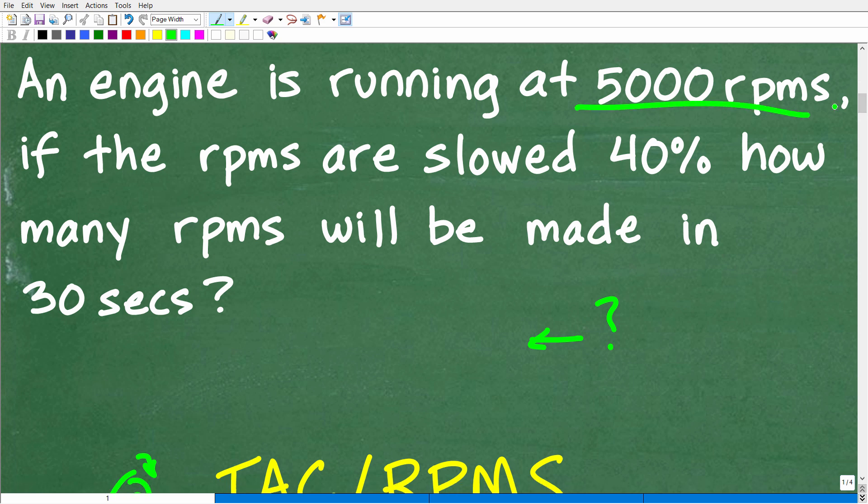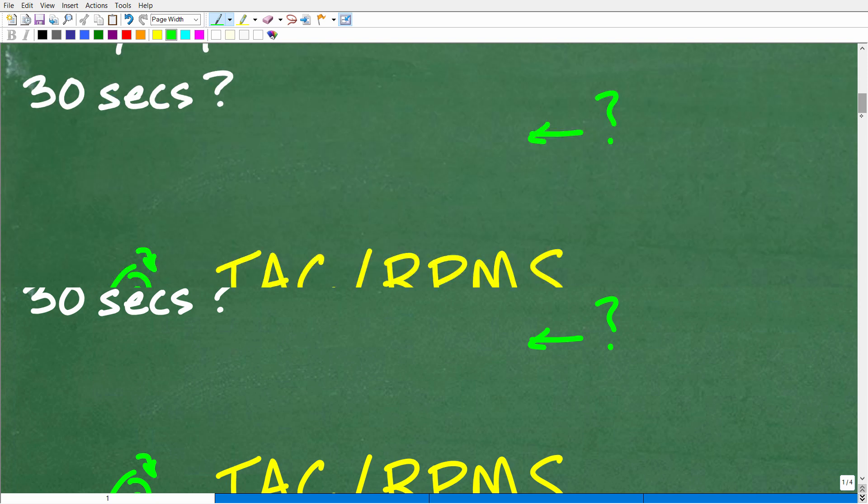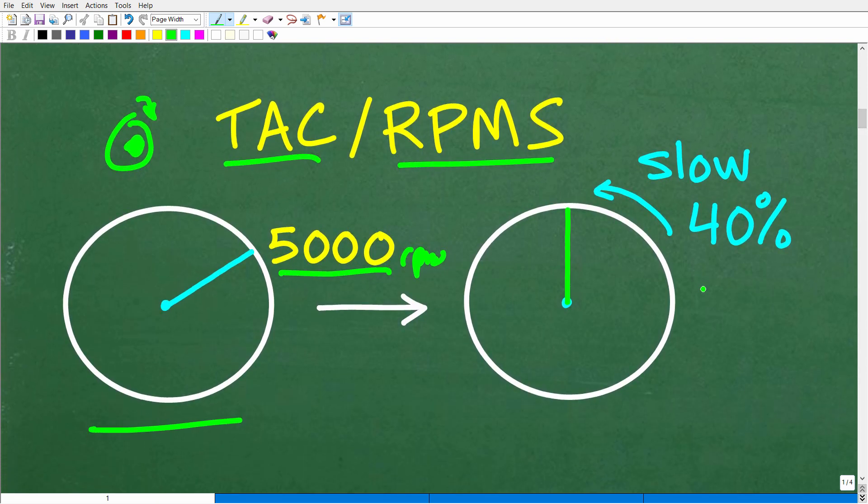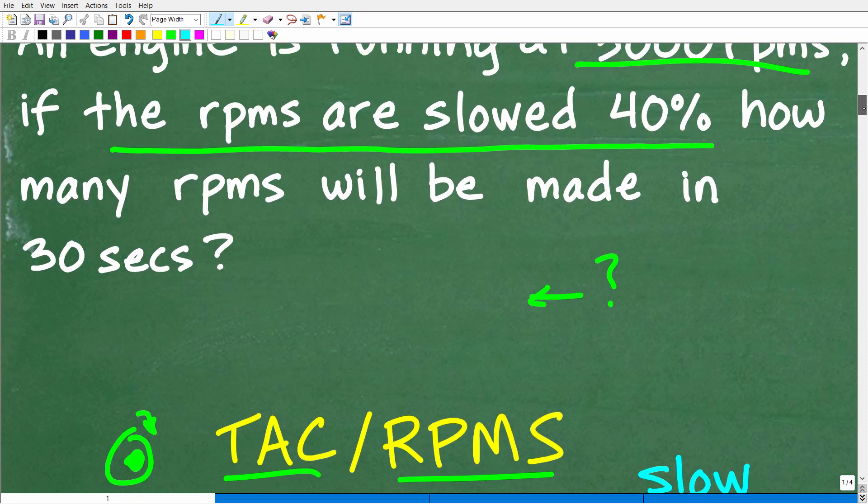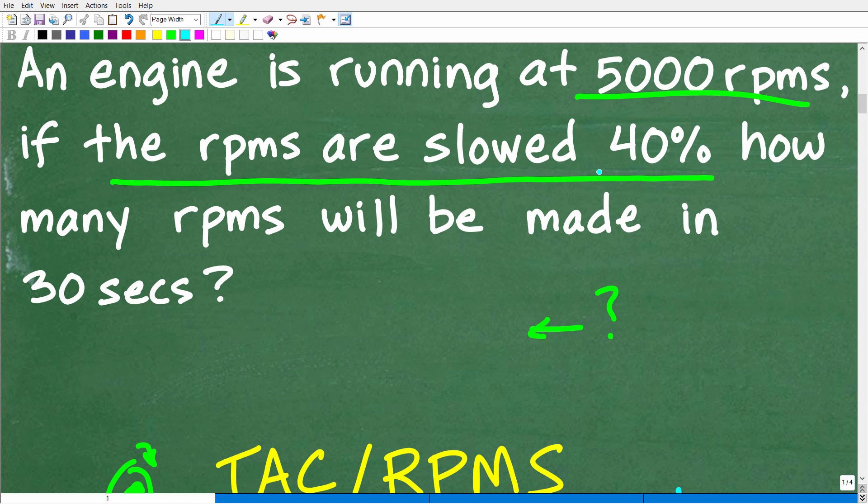So, an engine is running at 5,000 RPMs. If the RPMs are slowed 40%, now, how do we slow the RPMs? We'll just take your foot off the gas, and the engine is going to slow down. So, we're going to slow the RPMs down 40%, and now, the question is what? Well, the engine is going to be turning at a new speed, okay? So, there's going to be a new RPM at this speed, which is obviously slower than 5,000 RPMs. And at that point, whatever the RPMs is, we want whatever the RPMs at this scenario, once we slow down 40%, we want to answer what question? Well, the question is, if the RPMs are slowed 40%, how, we have to really hone in here, understand the question, how many RPMs will be made in 30 seconds or revolutions, okay?